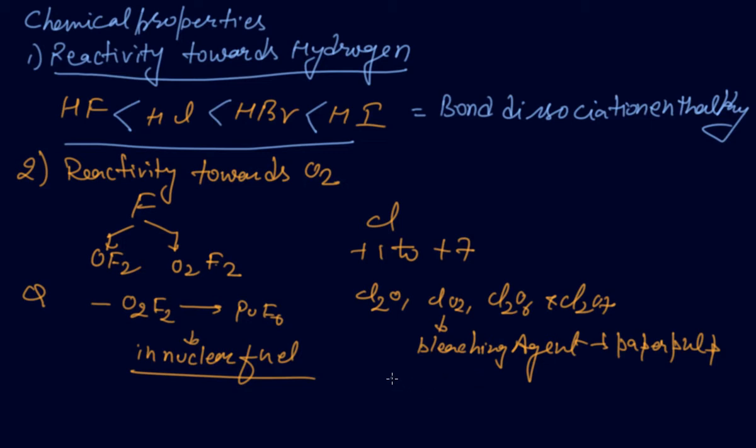Bromine forms Br2O, BrO2, and BrO3. These are the least stable halogen oxides and exist only at low temperature. They are powerful oxidizing agents.